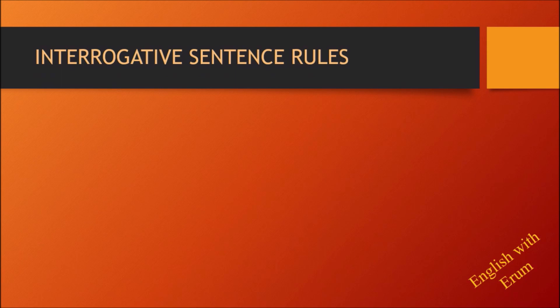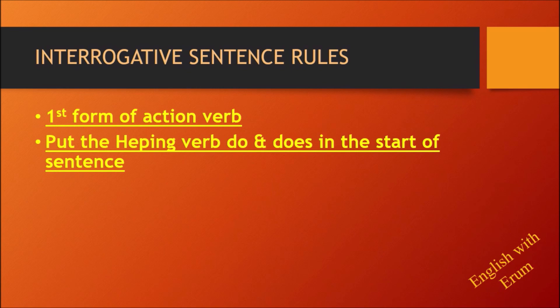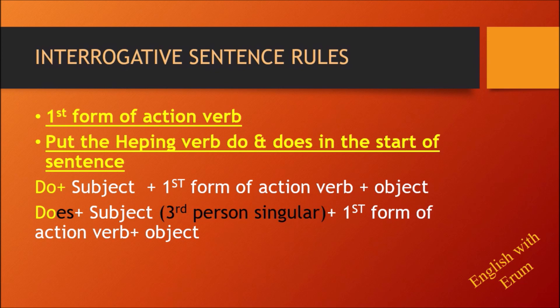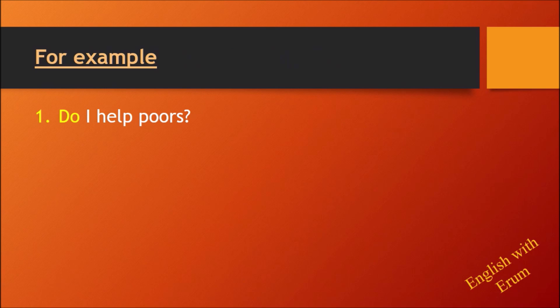Now the interrogative sentence rules. The first form of the action verb is used. The key change is that the helping verb 'do' or 'does' comes to the start of the sentence. For first and second person, the structure is: do plus subject plus first form of action verb plus object. For third person singular, the structure is: does plus subject plus first form of action verb plus object.